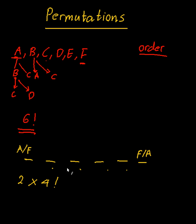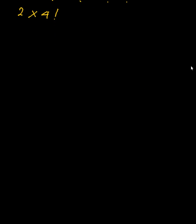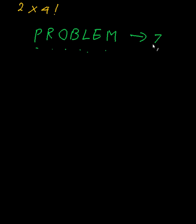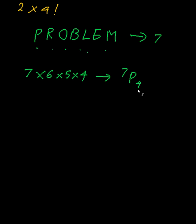Now suppose I have the word PROBLEM: P-R-O-B-L-E-M. From here I need to choose a four-letter word. There are seven letters, so the answer is seven times six times five times four — because the first gap can be filled by seven letters, and so on. Using NPR notation, this is seven pick four, which equals seven factorial divided by seven minus four factorial, i.e., seven factorial divided by three factorial. Notice that three, two, one is missing.